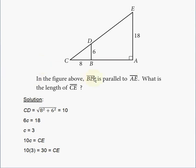In the figure above, BD is parallel to AE. What is the length of CE? So, what does this mean? BD is parallel to AE.